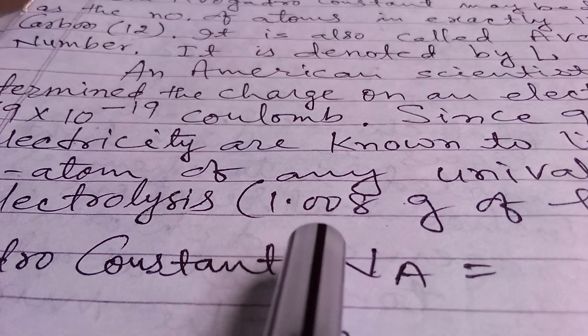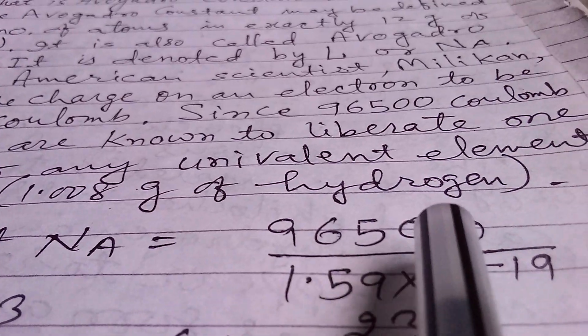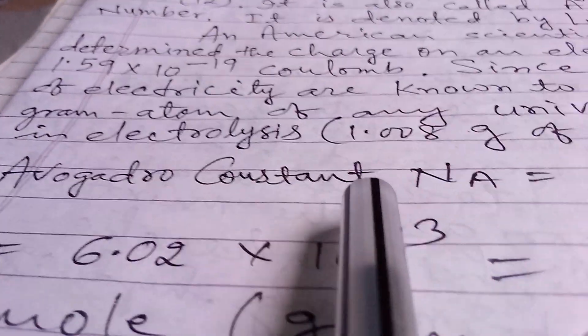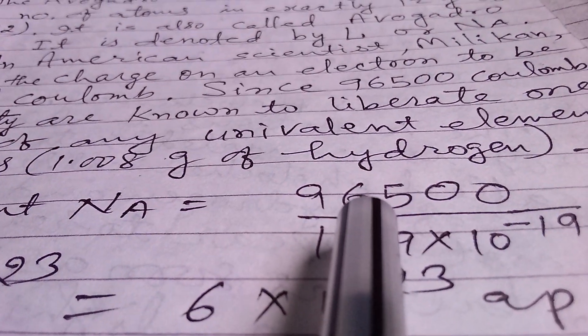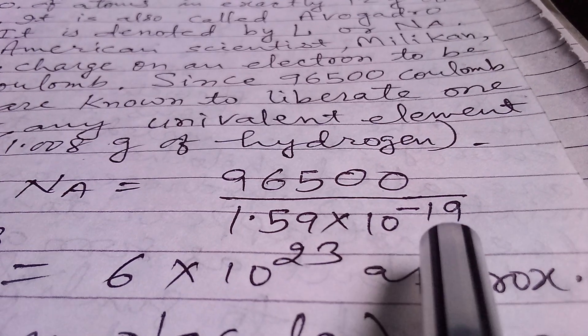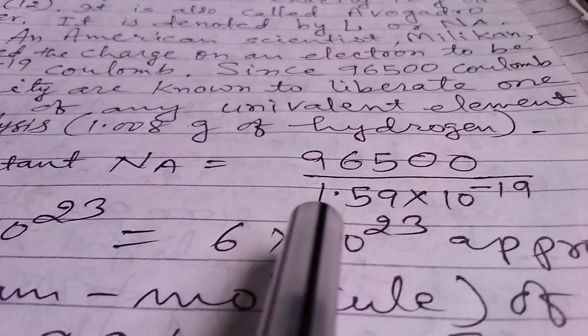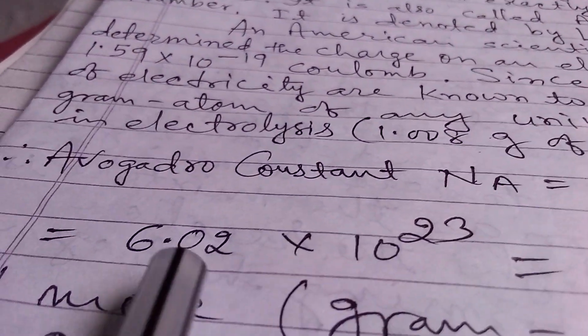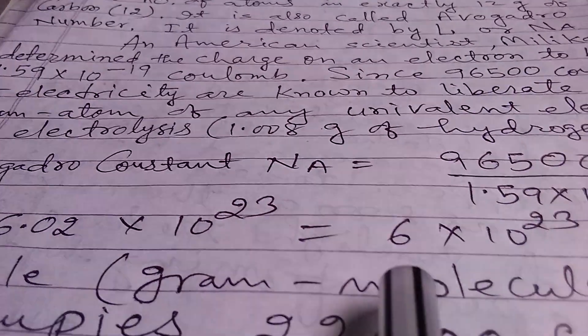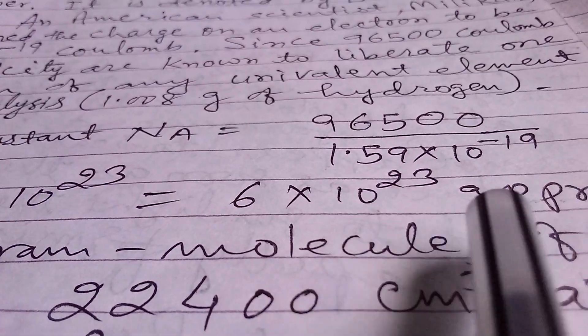1.008 grams of hydrogen. Therefore Avogadro's constant NA is equal to 96,500 divided by 1.59 × 10^-19, and that gives us 6.02 × 10^23, and that is equal to 6 × 10^23 approximately.